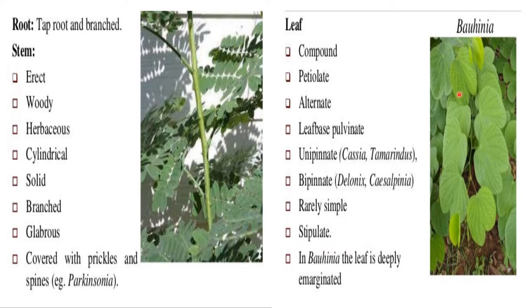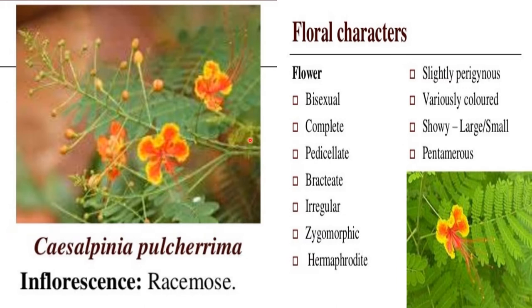Coming to the leaf: compound, petiolate, alternate. You can see it is alternate. Leaf base is pulvinate. Unipinnate in the case of Cassia and Tamarindus, whereas bipinnate in Delonix and Caesalpinia. Rarely simple. Stipulate. In Bauhinia, the leaf is deeply emarginate.